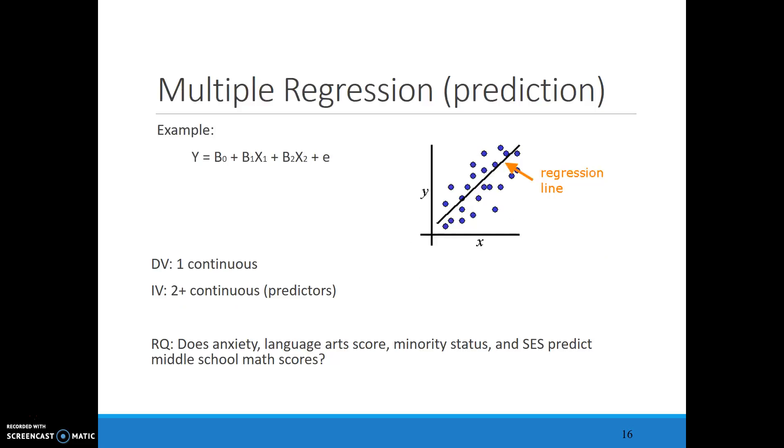And with multiple regression, we can put in two or more independent variables. These are our predictors. There is only one dependent variable. And remember, a dependent variable is essentially your outcome variable. What is the focus that you're trying to understand? In our example down here, our dependent variable would be math scores, and all of these would be my independent variables that are trying to predict math.